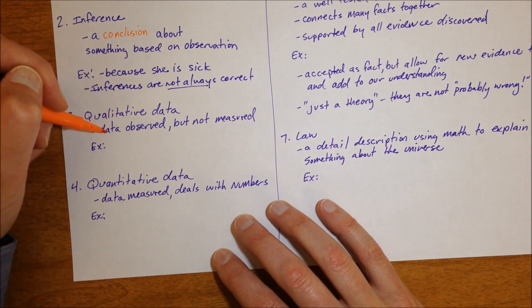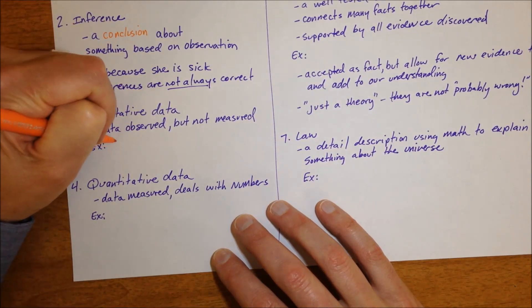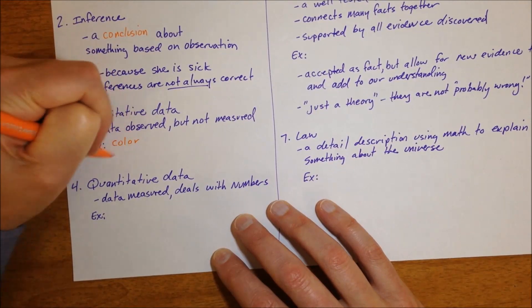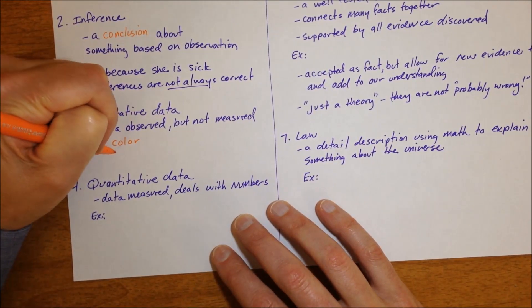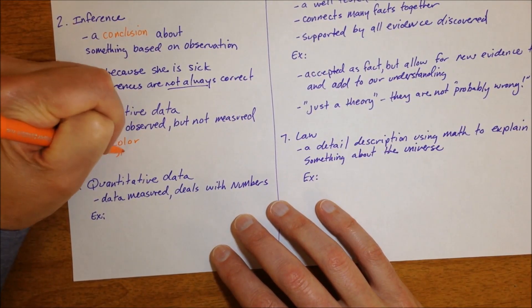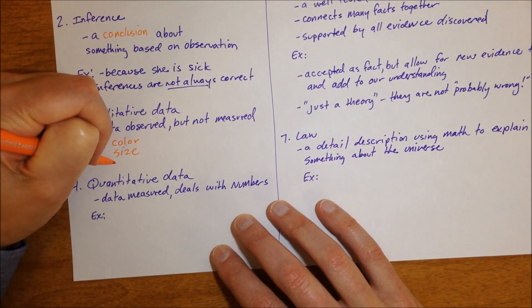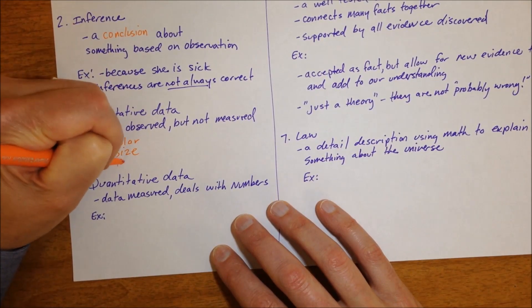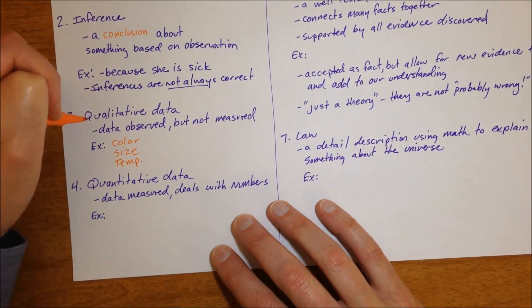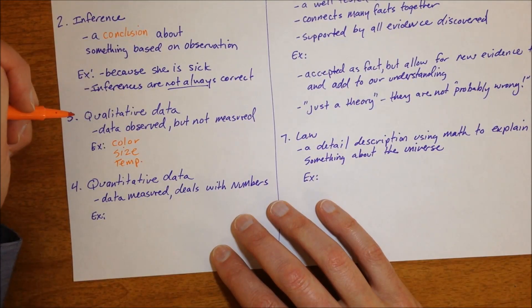Qualitative data is data that you observe but you don't measure. For example, the color of something, the size, you say it's big or small. If you say it's hot or cold without actually measuring it, you're taking a qualitative temperature measurement, hot, cold, medium.